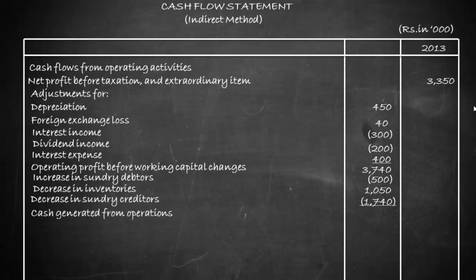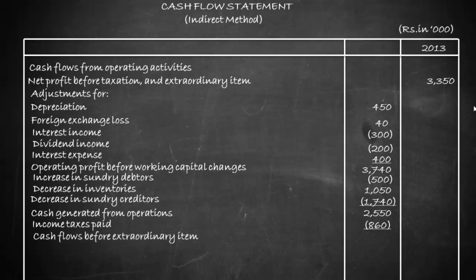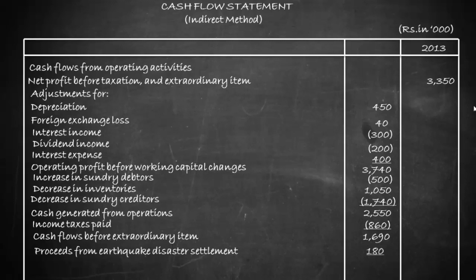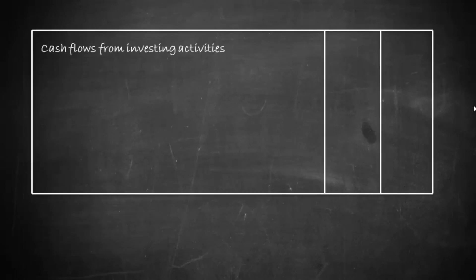Cash generated from operations is 2,550. Deducting income tax paid of 860 (with 40 adjusted as TDS) gives cash flow before extraordinary item of 1,690. Adding proceeds from earthquake disaster settlement of 180 gives net cash from operating activities of 1,870. Now moving to cash flows from investing activities.